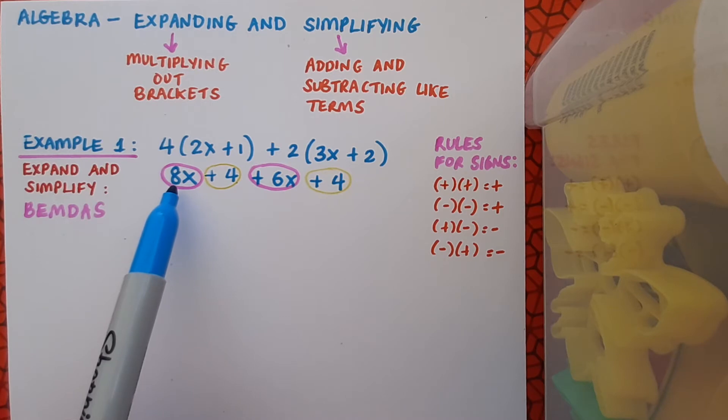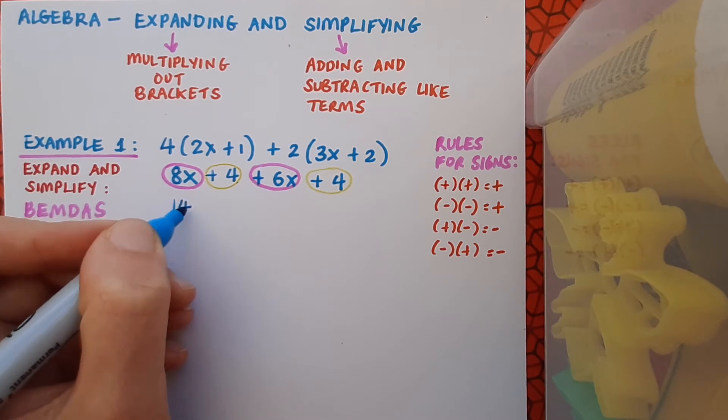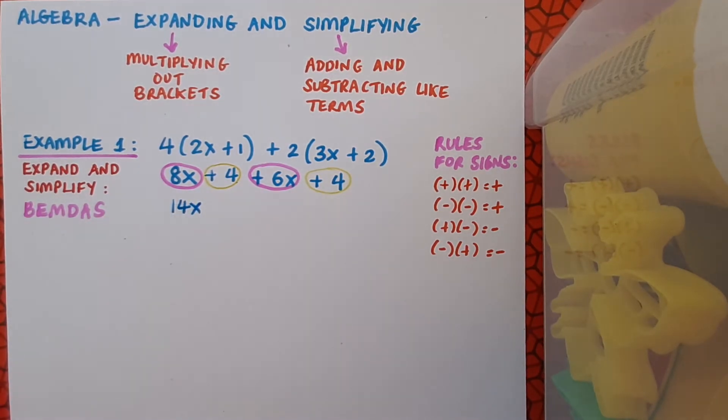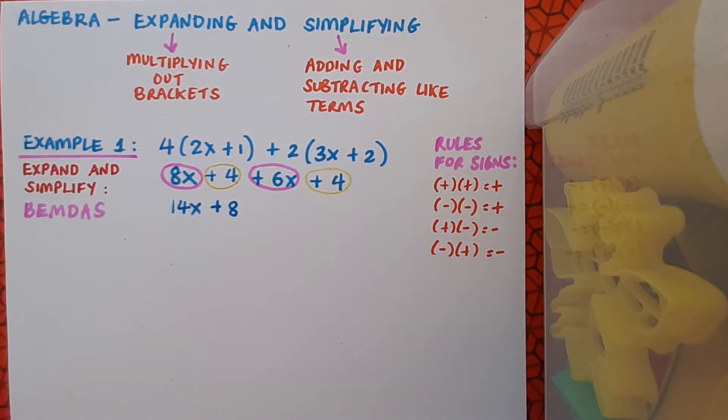What do I call this number in front of the variable? It's the coefficient. Okay, so tidying up: 8x and 6x makes 14x, and plus 4 plus 4 makes plus 8. That's example 1 finished. We've expanded by multiplying, and we've simplified by adding and subtracting our like terms.